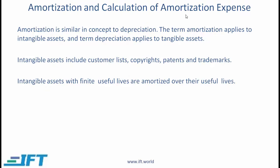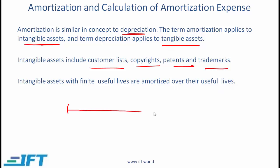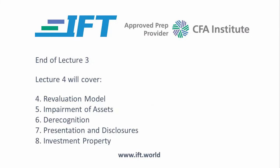Amortization is similar in concept to depreciation. The term amortization applies to intangible assets, while depreciation applies to tangible assets. Intangible assets include customer lists, copyrights, patents, trademarks, software, and so on. Intangible assets with finite useful lives are amortized over their useful lives — exactly the same concept as depreciation. If you have an intangible asset with a 10-year life purchased for 1,000, then every year for 10 years you would amortize 100, assuming the straight-line method.